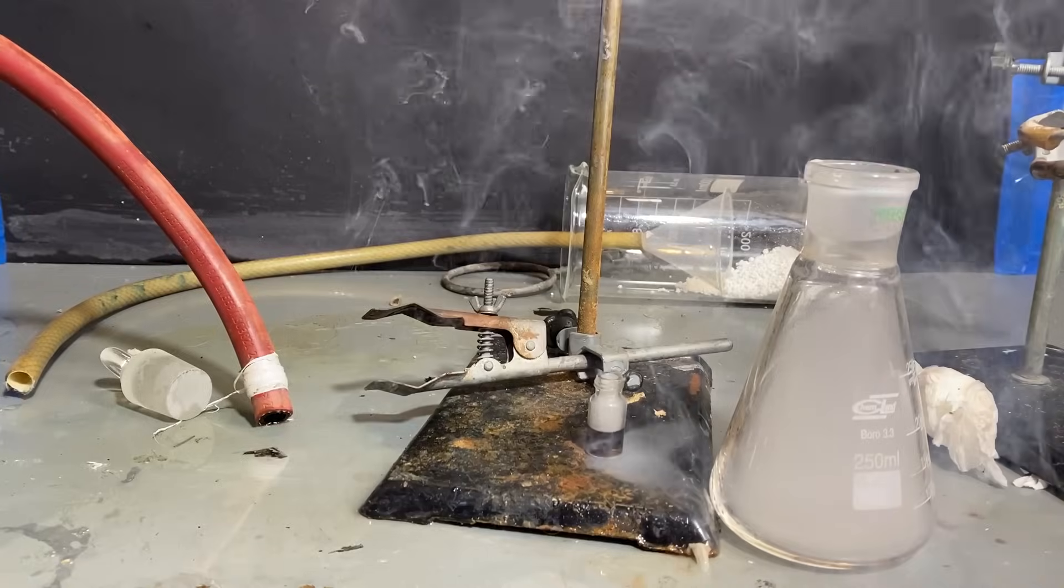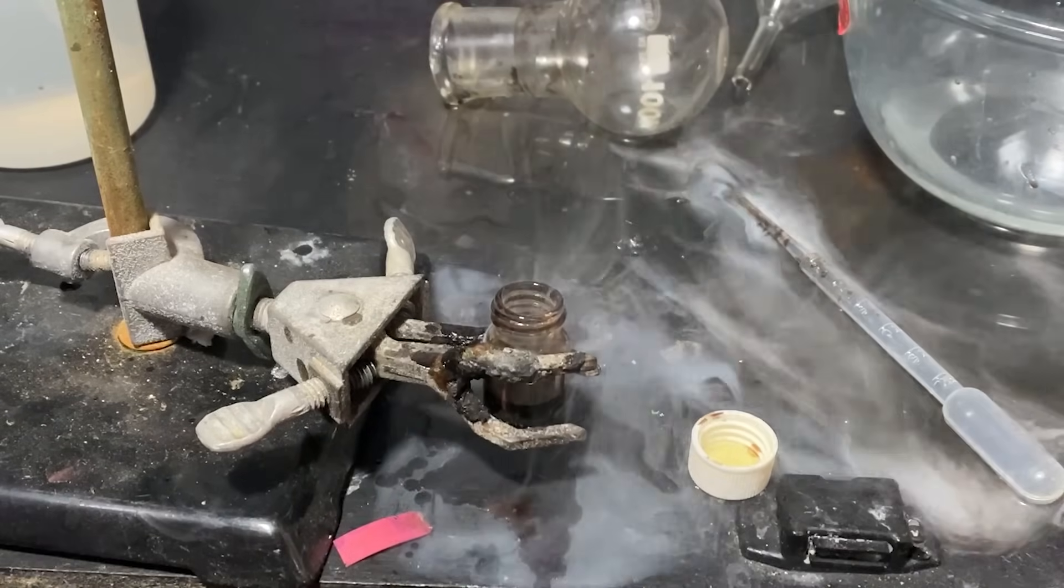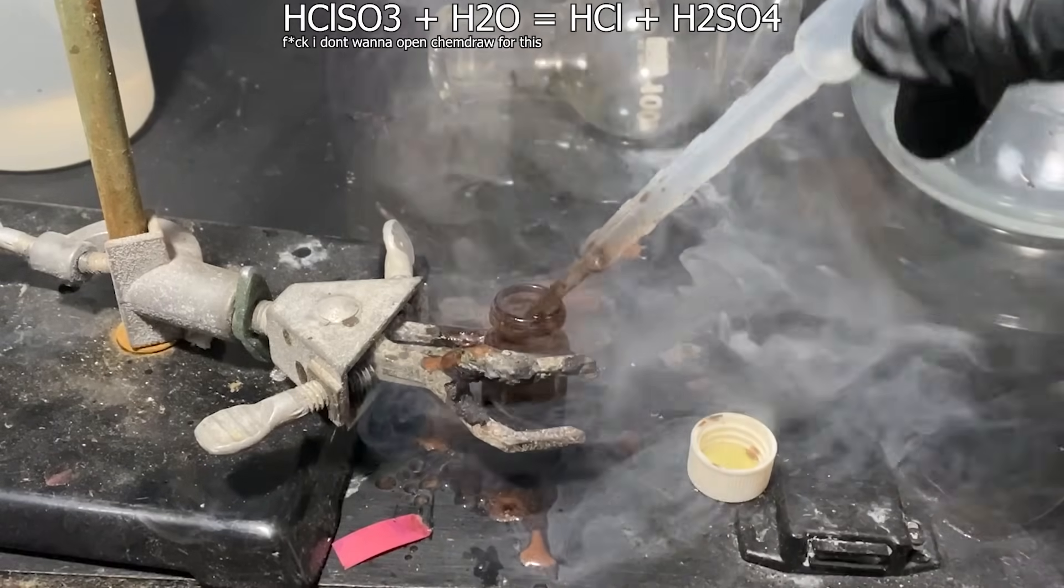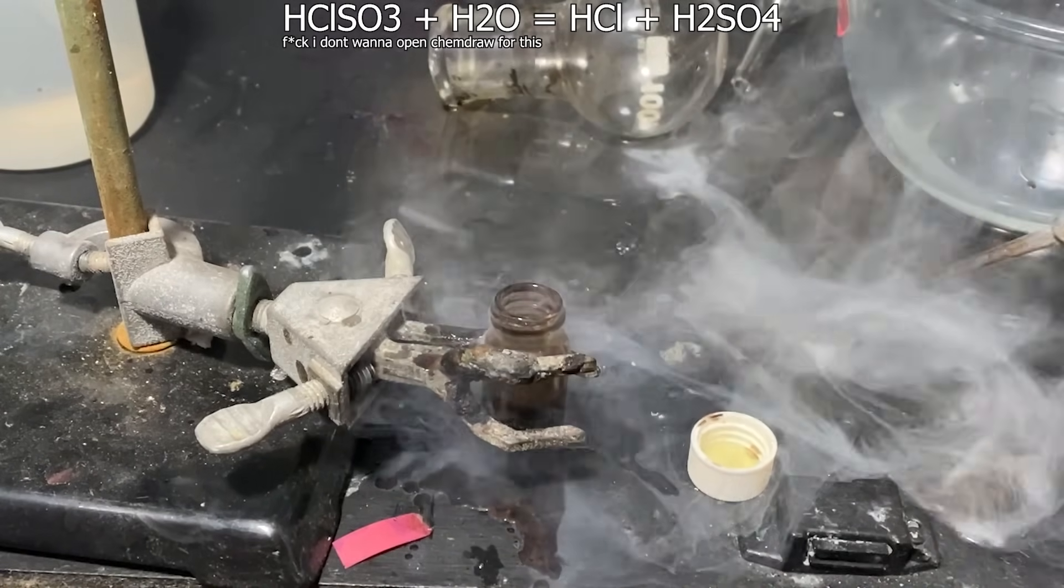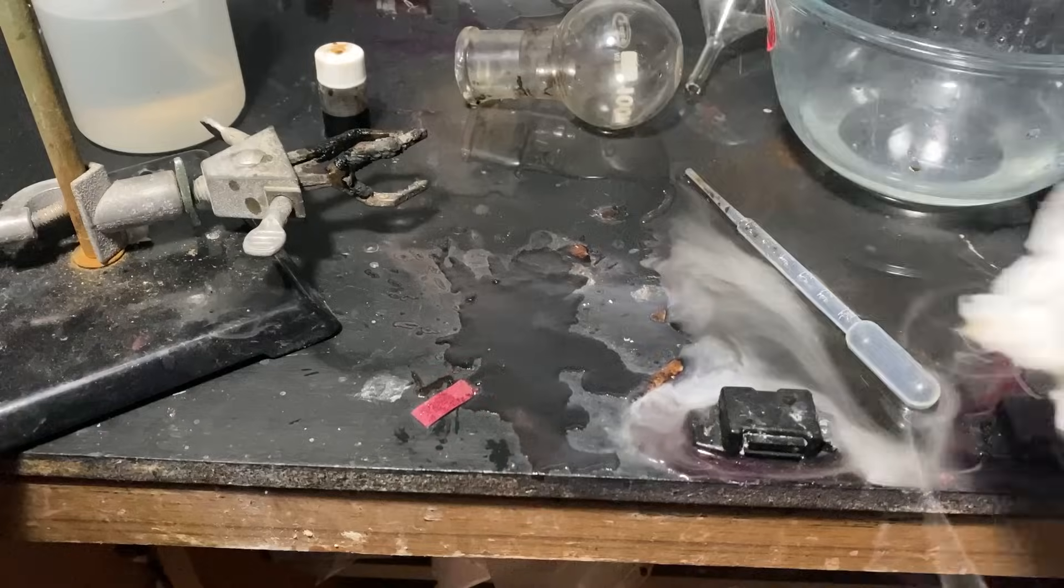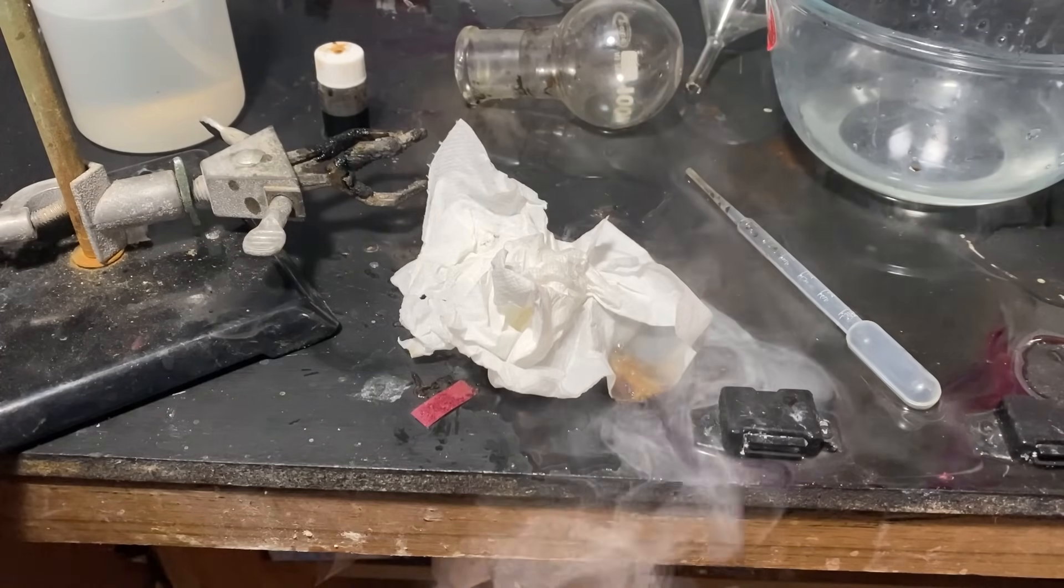And as you may have noticed, the chlorosulfonic acid doesn't take too kindly to water, as immediately it takes the opportunity to hydrolyze and break down into HCl and sulfuric acid, thus my earlier spillage. In fact, this property is so intense that it reacts with even the slightest bit of moisture in the air to form hydrochloric and sulfuric acids, which is why the mist is so thick here.